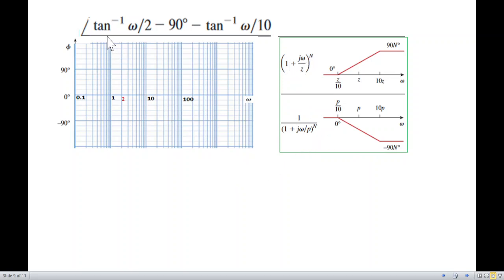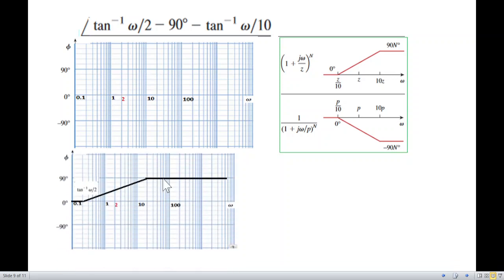The value is zero at one-tenth of 2, which is point 0.2. From zero we take the slope up to 10Z, which is 20. So from 0.2 to 20 we go to 90 degrees.